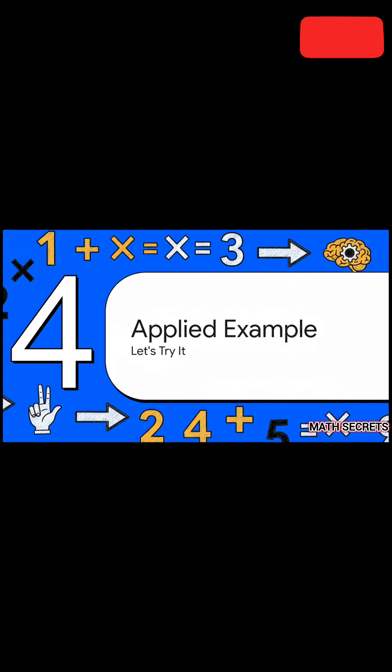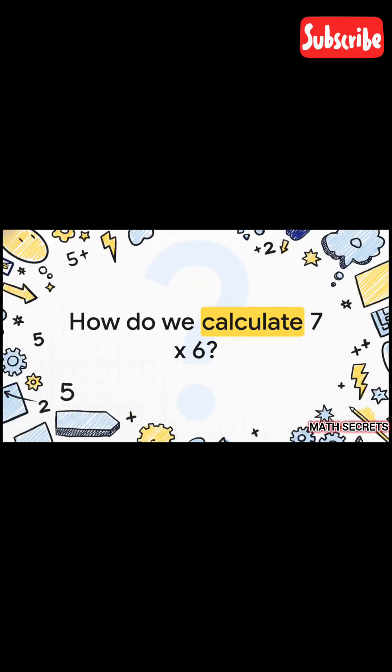Right, enough theory. Talk is cheap. The best way to see how powerful this is, is to actually put it into practice. Let's do a quick example together—a classic problem straight from the seven times table: 7×6. Maybe you have it memorized, maybe you don't. But let's pretend your mind has gone completely blank, and you need to figure it out fast.